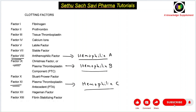To summarize: Hemophilia A — deficiency of clotting factor 8; Hemophilia B — deficiency of clotting factor 9; Hemophilia C — deficiency of clotting factor 11; and Parahemophilia — deficiency of clotting factor 5.